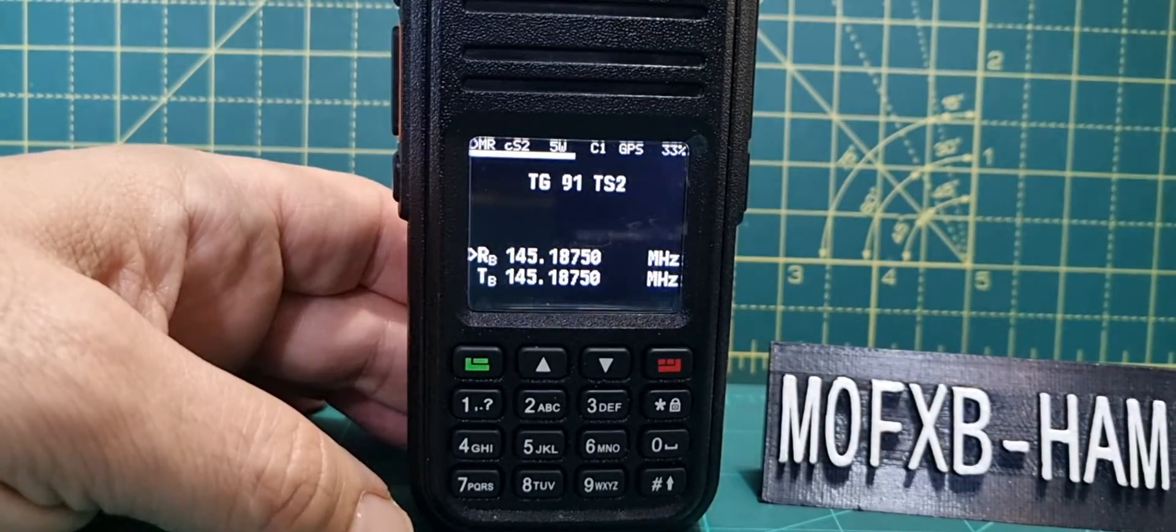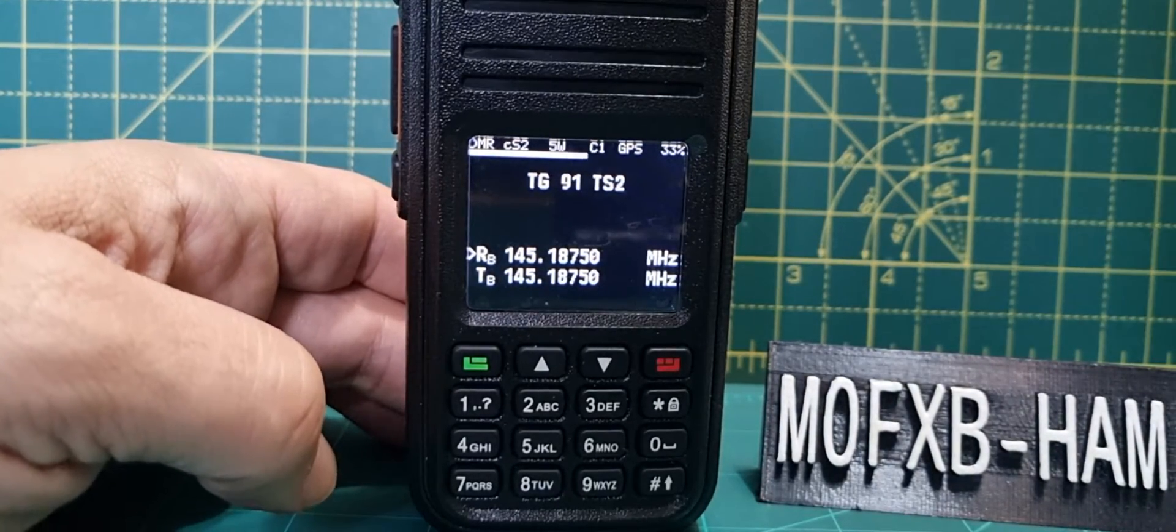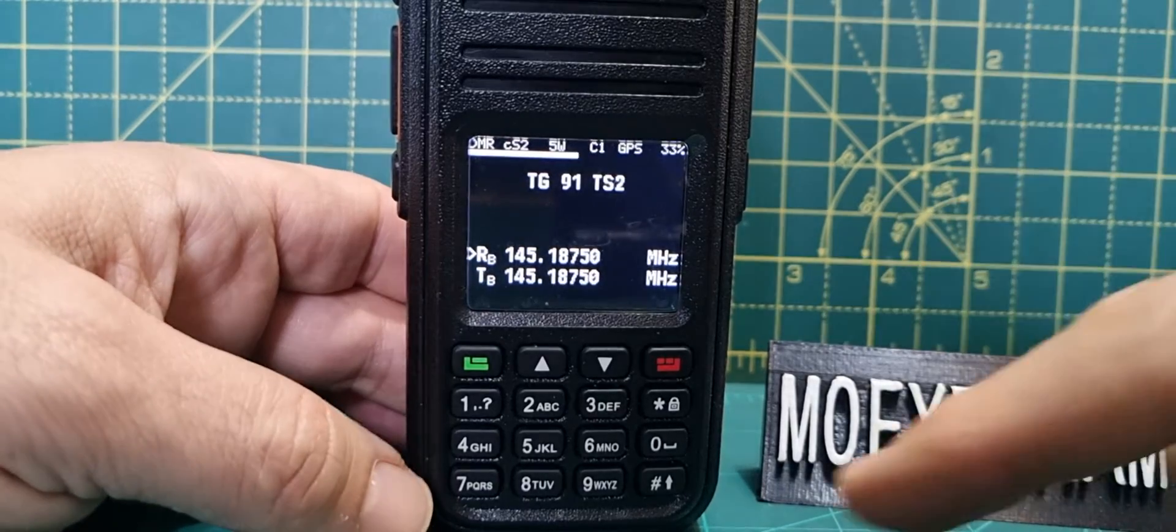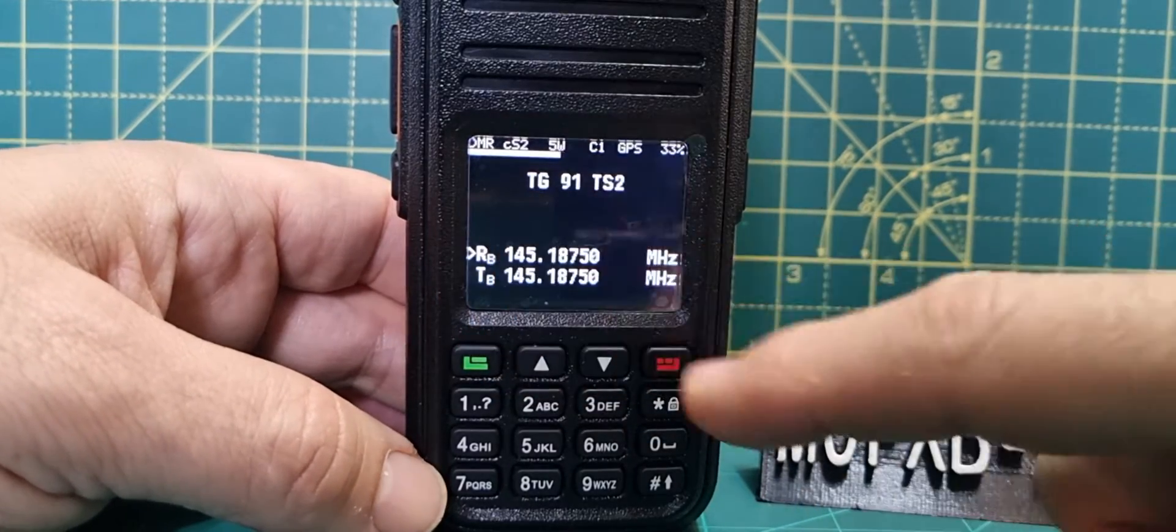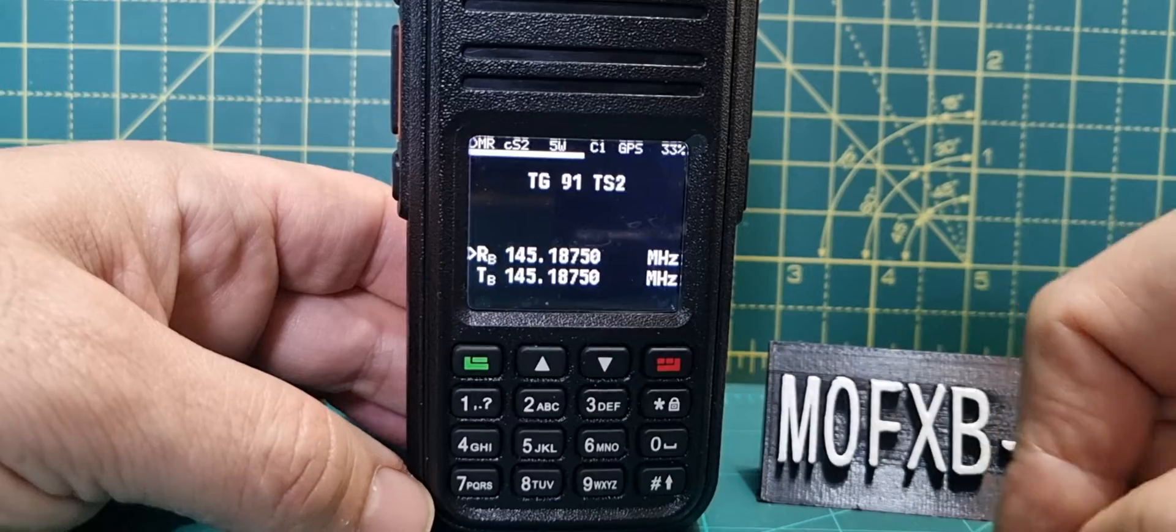So we're going to use the quick menu to have promiscuous mode so we can hear both time slots and go dual watch. At the moment we will receive on the A and transmit on the B.